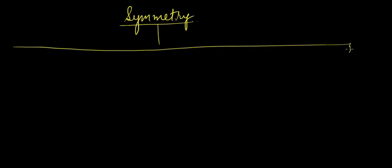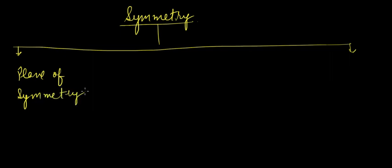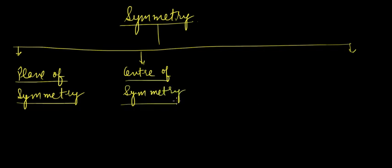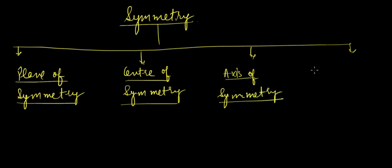In this lecture we'll be studying about symmetry in compounds. We'll be discussing four types of symmetry: first, plane of symmetry; second, center of symmetry; third, axis of symmetry; and finally the fourth, alternate axis of symmetry.